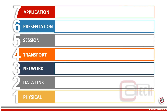The OSI model provides a conceptual framework for communication between computers, but the model itself is not a method of communication. Actual communication takes place through communication protocols, and each layer on the OSI model has some protocols associated with it.